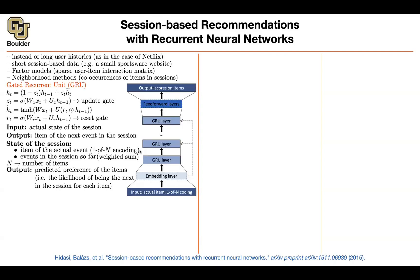Here is the architecture. The actual item goes in as a one-of-n encoding. In addition to this weighted sum, you embed them — this is the embedding layer, which is simply multiplying the one-hot encoding by a matrix. Then you have your GRU layers, a feed-forward layer on top, and then you predict the score of that item.